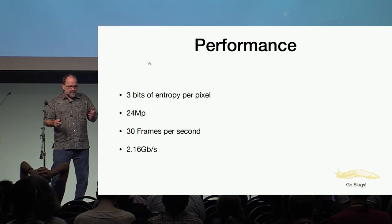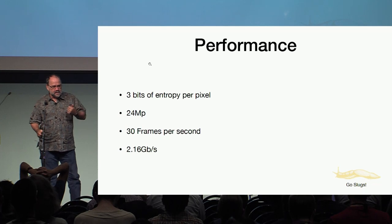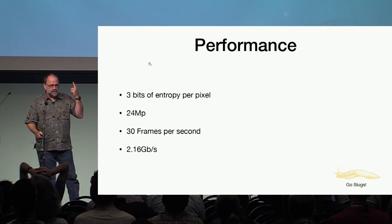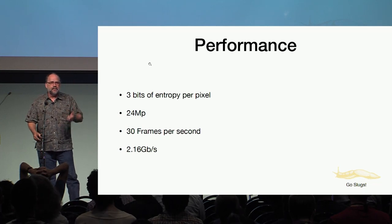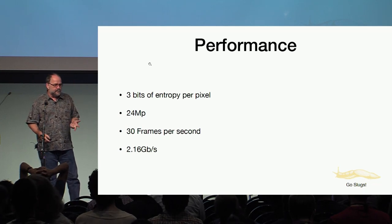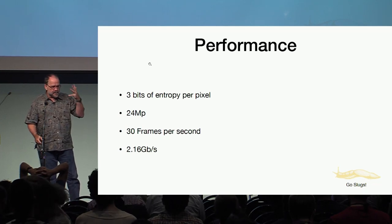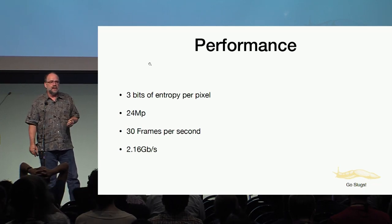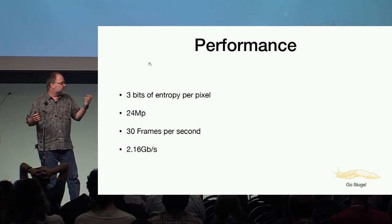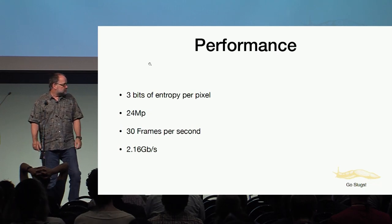If you get three bits of entropy per pixel, with 24 megapixels at 30 frames per second, that's 2.1 gigabits per second of pure entropy. Thank you very much.